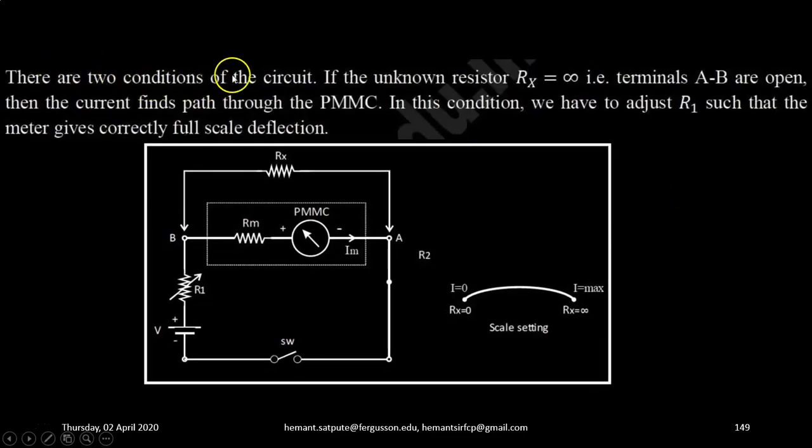There are two conditions of the circuit. If the unknown resistance Rx is equal to infinite, that means terminals A and B are open, then the current finds path through the PMMC meter. In this condition, we have to adjust R1 such that the meter gives correctly the full scale deflection.